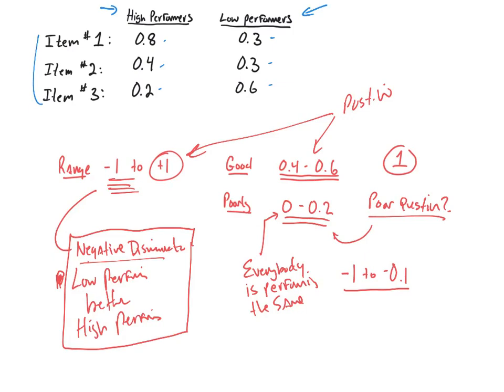Let's look at item one. Item one has a difficulty of 0.8 for the high-performers and 0.3 for the low-performers. I'll calculate the index of discrimination. 0.8 minus 0.3 gives me 0.5. So the index of discrimination is 0.5 for that particular item, and that falls into this good range here. This is generally a question that is good at discriminating between high and low performers.